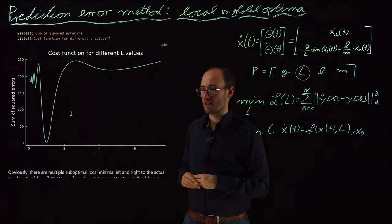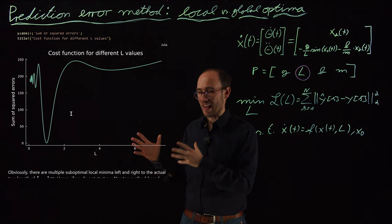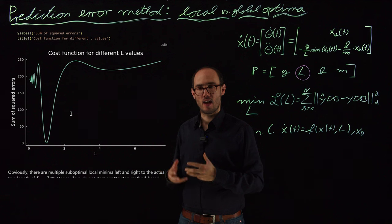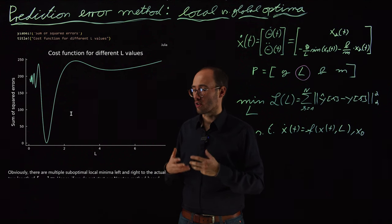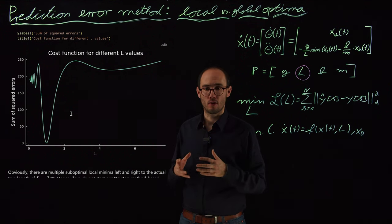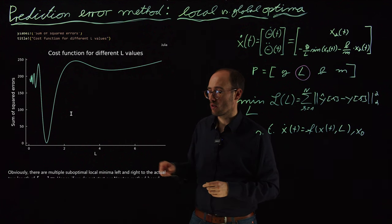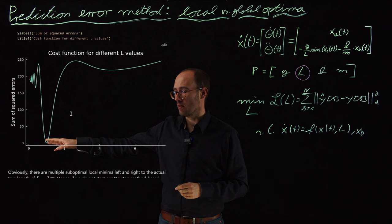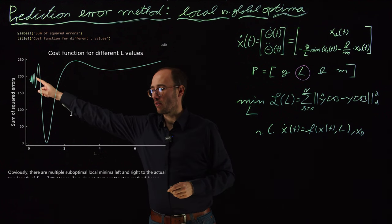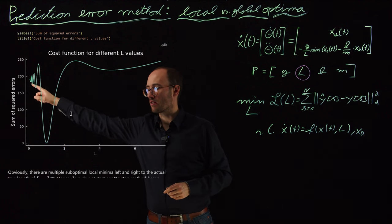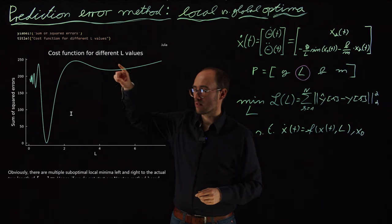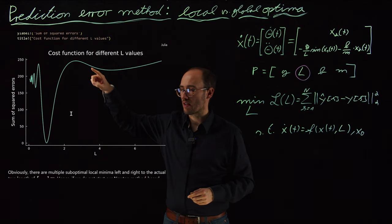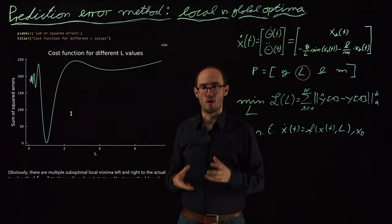However, in contrast to our previous example, the length value seems to have a non-convex impact on the cost function. Because we do not have only this global minimum, but we also have a couple of local minima down here, and also this valley here is basically representing another local minimum.